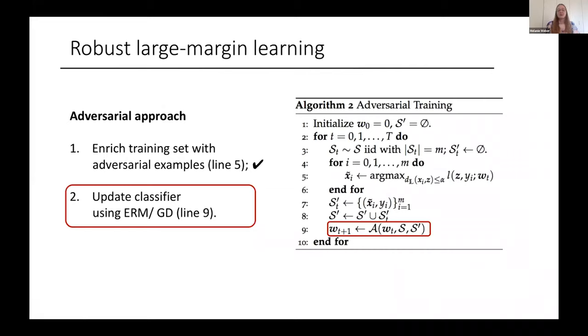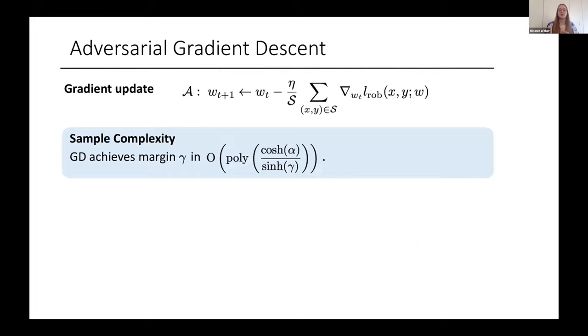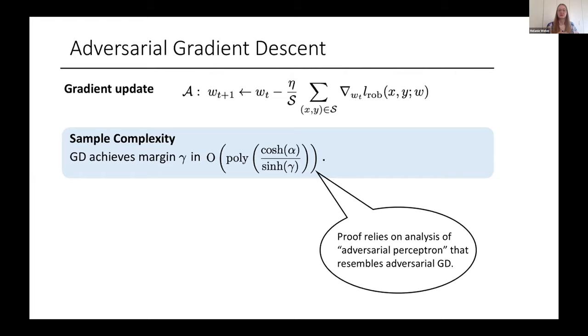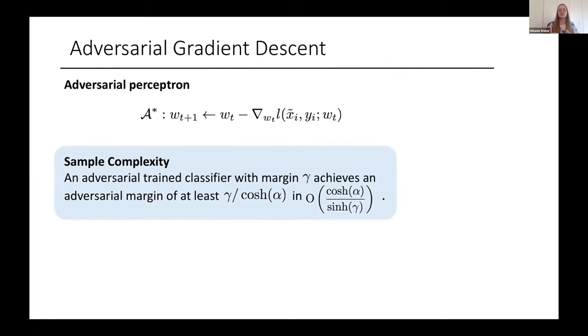Now that we have a good approach for computing adversarial examples, let's talk about different classifiers. We first want to consider an adversarial gradient descent. We have a classic gradient descent update. We've probably all seen update rules of that form. With that update rule, we can show that our algorithm is efficient. It converges in polynomial time. The proof of that is quite lengthy and technical. I can't present too many details of the proof. I just want to show one critical ingredient of the proof, namely the analysis of something that we termed the adversarial perceptron. Before analyzing the full adversarial gradient descent, we considered an adversarial enriched hyperbolic perceptron and performed an analysis of that. We derived a sample complexity.